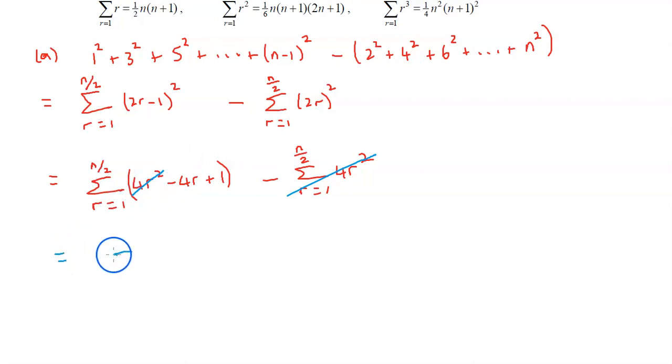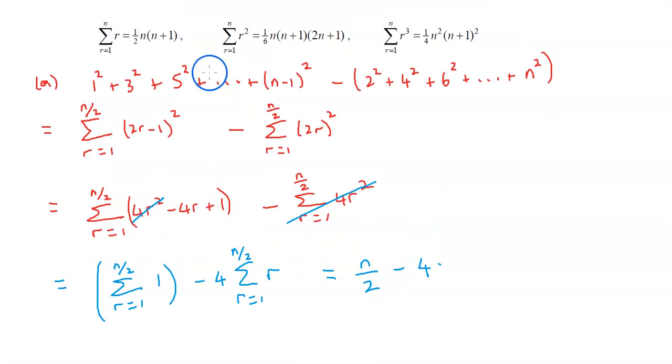So really what we're left with is the sum from r equals 1 to n divided by 2 of 1, and then minus 4 times the sum from r equals 1 to n divided by 2 of r. Working this thing out, this one is clearly just n divided by 2, and then minus 4 times the formula: half times n divided by 2 times n divided by 2 plus 1.